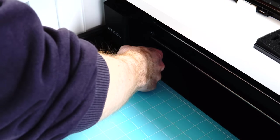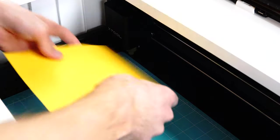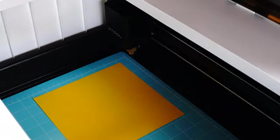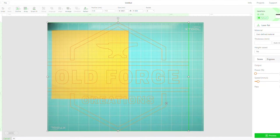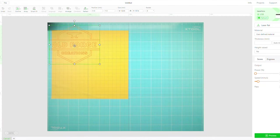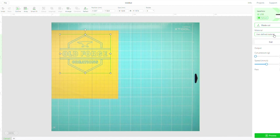It's got the built-in camera so you can see the material through the software. The software handles files very straightforwardly. You can see what you're doing on the preview. It's got all the materials that they supply pre-programmed in so you just pick your material, set it up and it's ready to go.